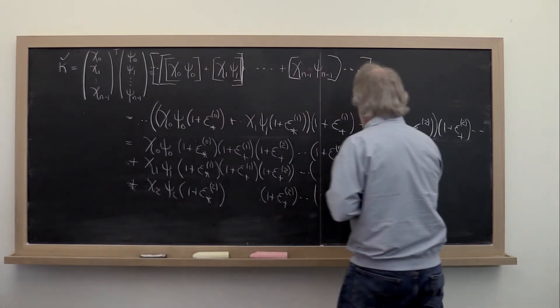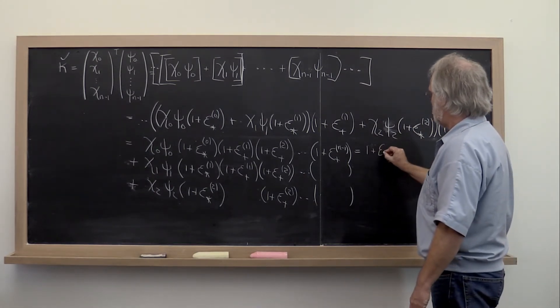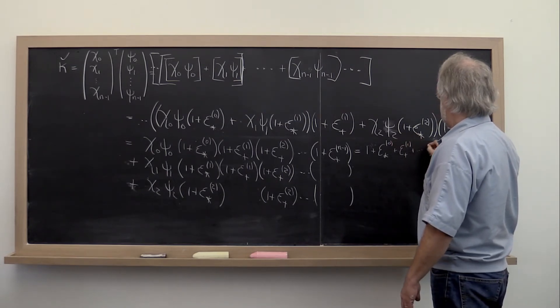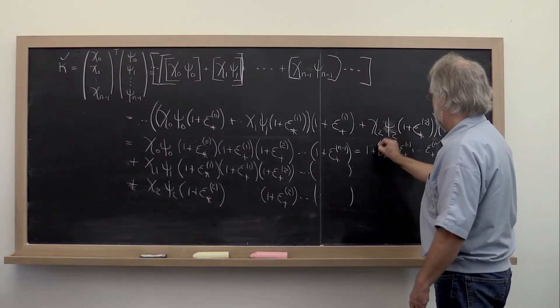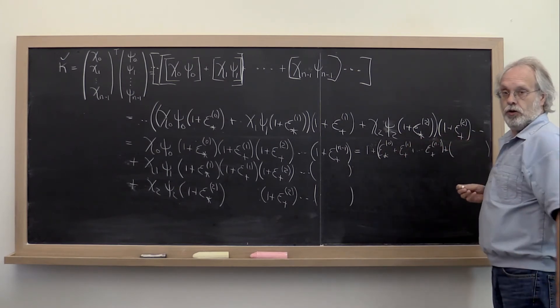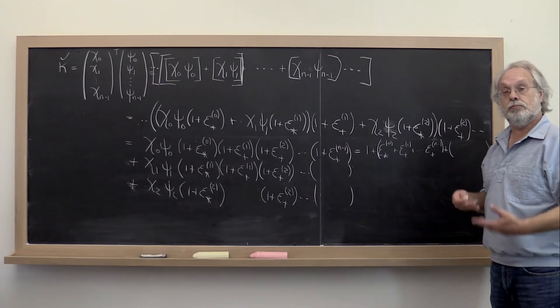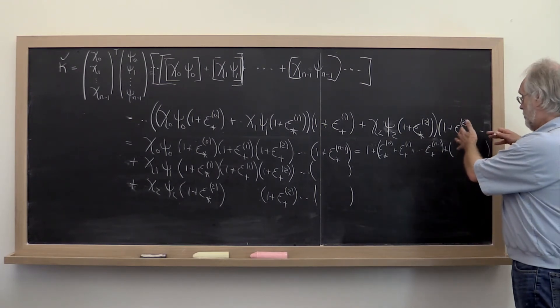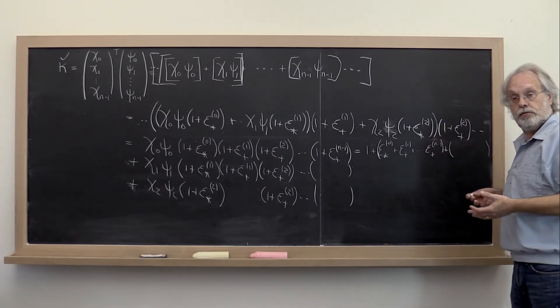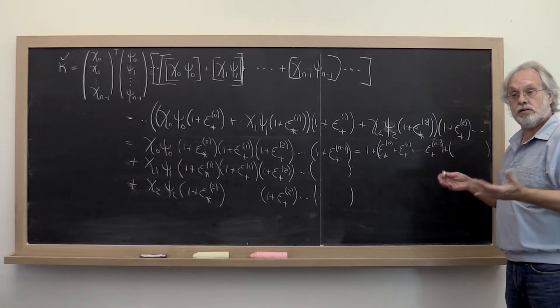Now this right here, if you work it all out, actually looks like 1 plus epsilon star 0 plus epsilon plus 1 and so forth. Then you get a term that has two of these epsilons multiplied together in all combinations. Each of these epsilons in magnitude is less than the machine epsilon, so these further terms where you start multiplying multiple epsilons together become very small in a hurry.